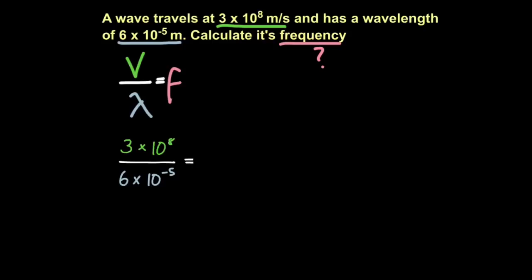So if you remember, velocity divided by wavelength equals frequency. So let's substitute our figures. Velocity is 3 times 10 to the 8. And wavelength is 6 times 10 to the minus 5. So this is our calculation. Step 1, 3 divided by 6, which is 0.5.